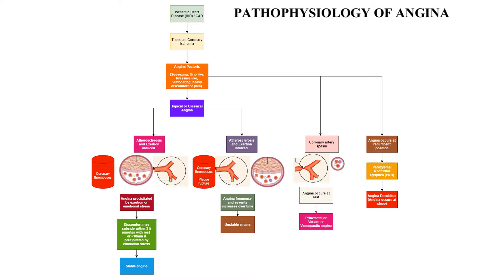In typical angina, it is purely dependent upon the workload of the heart — when the workload increases, angina increases. It is due to atherosclerosis. Stable angina is where increased workload worsens the pain, and rest relieves it. In unstable angina, there are repeated episodes of angina pain. In case of sudden coronary artery spasm, angina pectoris may occur at rest — that is Prinzmetal or variant angina. There is also a special kind of angina which occurs at sleep, called angina decubitus.